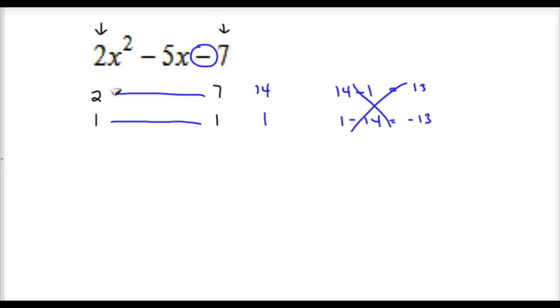So I'm going to go with my second option. Before I did 2 times 7, now I'm going to go 2 times 1 and then 1 times 7. So 2 times 1 is 2. 1 times 7 is 7. My options here are 7 minus 2 or 2 minus 7. 7 minus 2 is 5. 2 minus 7 is negative 5. So I want my 2 to be positive and I want my 7 to be negative. So I'm going to open up my two sets of parentheses.